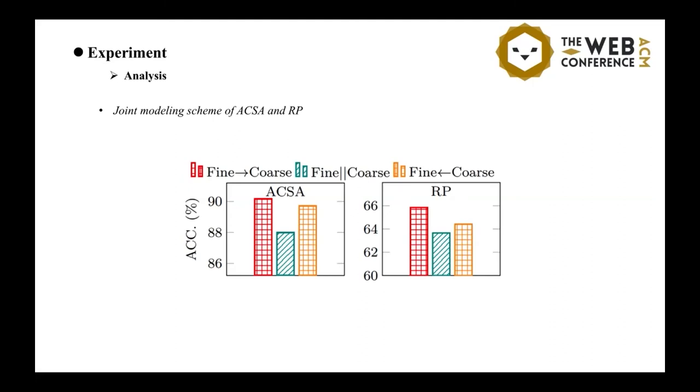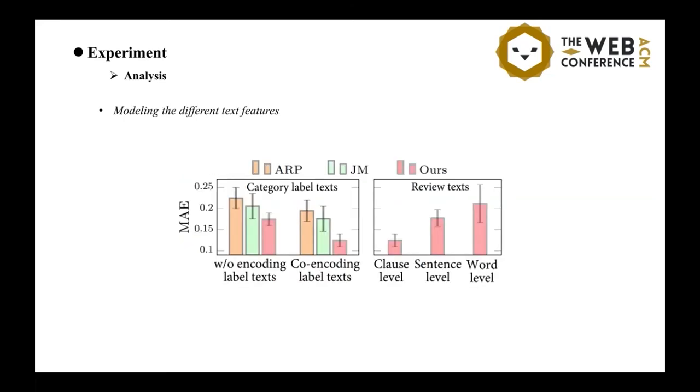But, most importantly, the fine-to-coarse modeling is most helpful in RP than that in ACSA. Next, we examine the impacts of the different text modeling on the performance, in terms of the category label text and the review text.